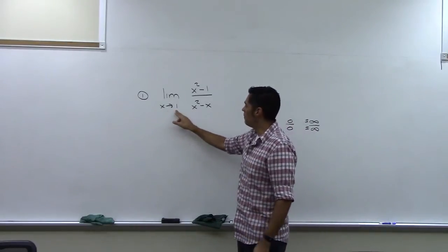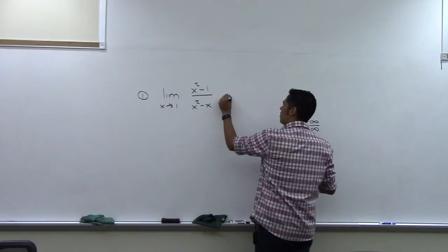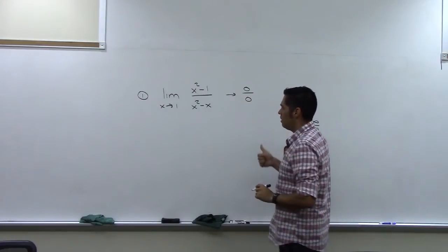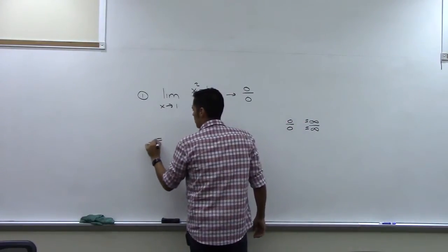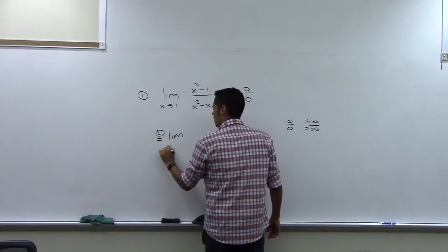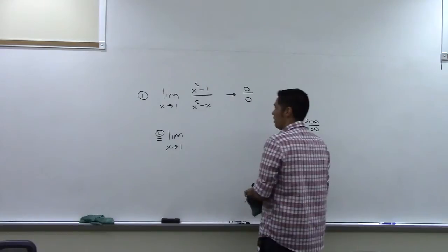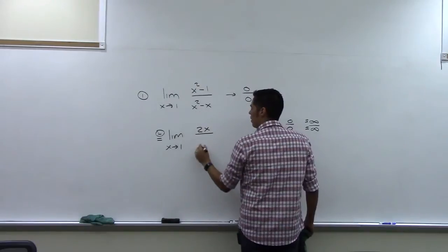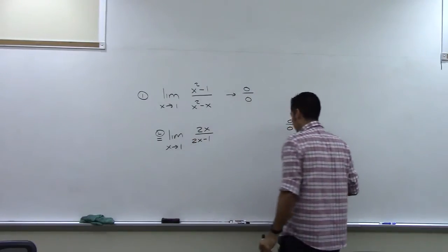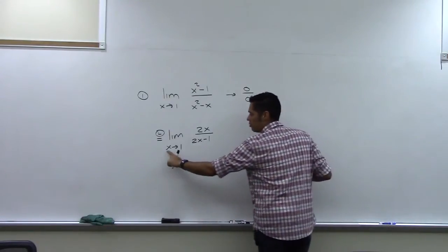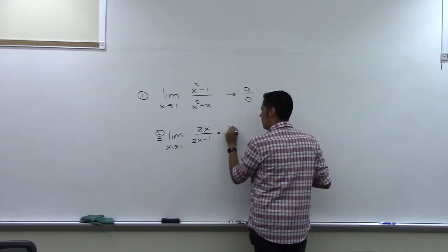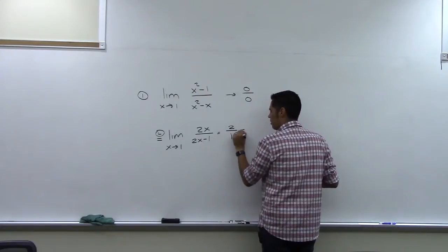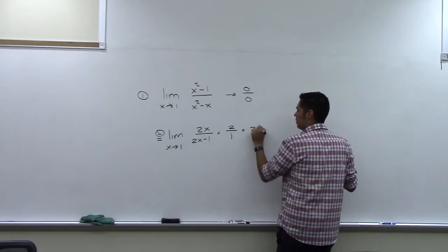Number one: we're asked to find a limit as x goes to 1. If we let x go to 1, we get 1 squared minus 1 — the top is headed to 0 — and the bottom is 1 minus 1, which is also 0. So by L'Hopital's Rule, we take the limit as x approaches 1, the derivative of the top is 2x and the derivative of the bottom is 2x minus 1. Plugging in: 2 on top, 2 minus 1 is 1 on the bottom. The limit is 2.